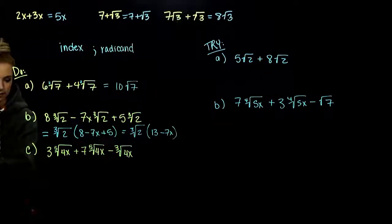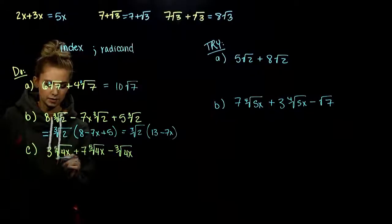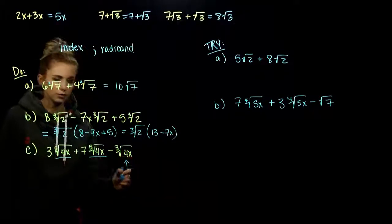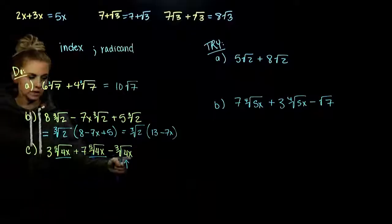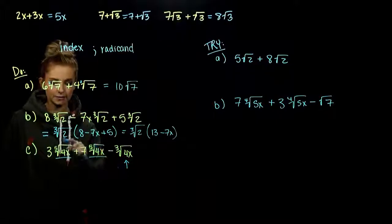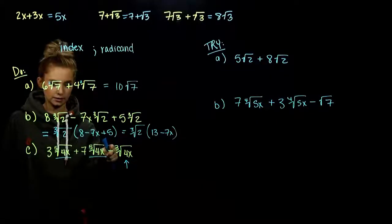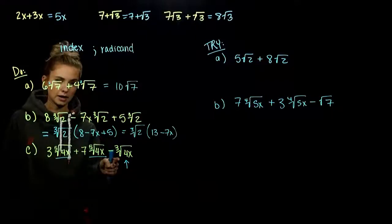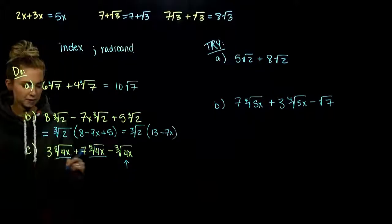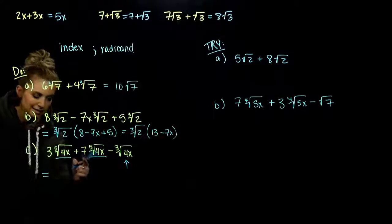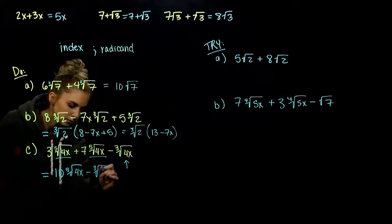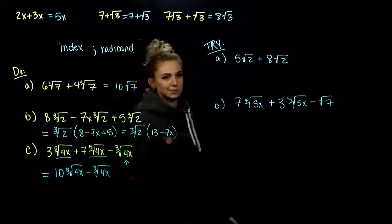Part C: what is matching exactly? We've got the fifth root of 4x, fifth root of 4x, and then the third root of 4x. Two are alike and one is different — the index is different. So we can combine the first two together, but not with the last radical. It doesn't have the same index, so they're not like terms. Seven and another three gives us ten factors of the fifth root of 4x, and we're still subtracting the third root of 4x.